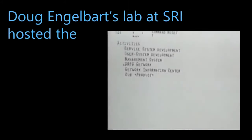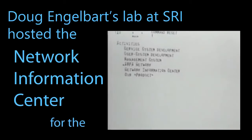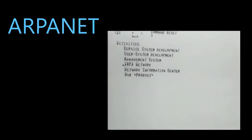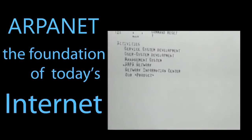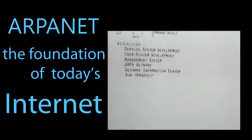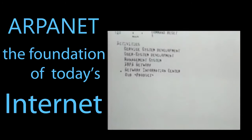Engelbart also discusses the forthcoming ARPA computer network — an experimental network that would eventually connect some 20 experimental computers, enabling him to run a system in Cambridge over the network and develop a special service for network information: who has what services, what protocol to use, who is up today, where to find user guides and papers describing different systems.